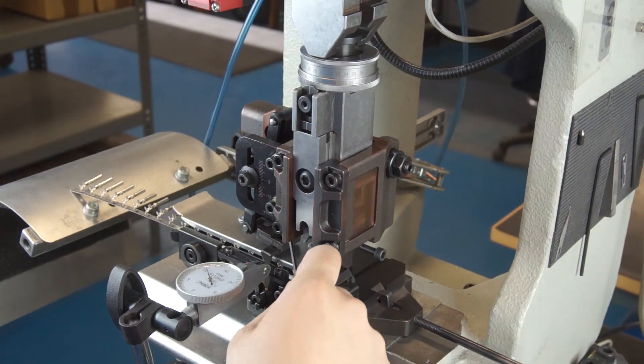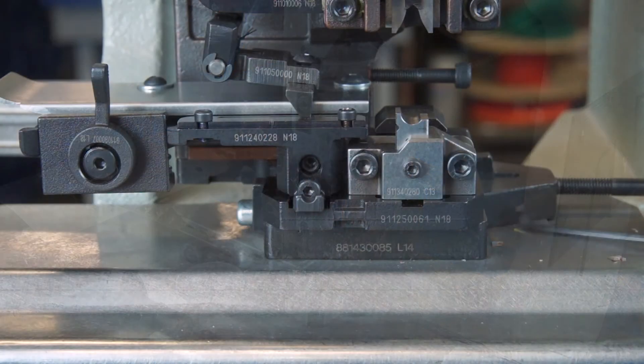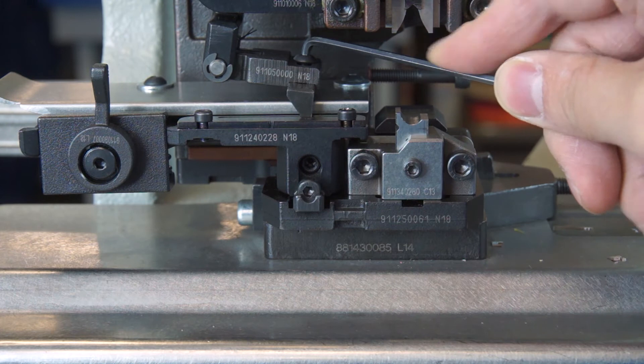To adjust the bell mouth, first loosen the feed finger. If you did not loosen this, you can potentially break this part later on. To do so, take a 2.5mm hex wrench and turn this screw counterclockwise by about a half turn.